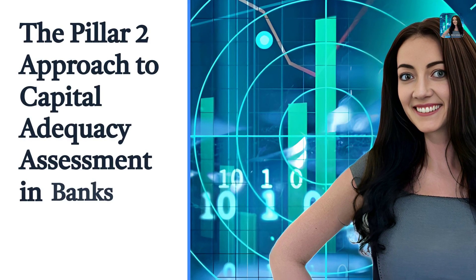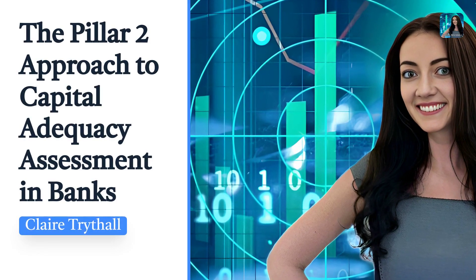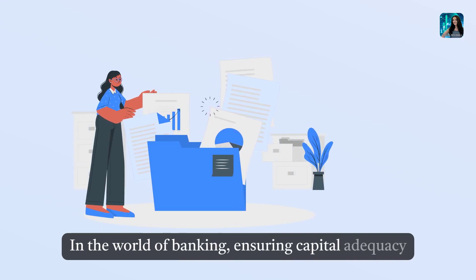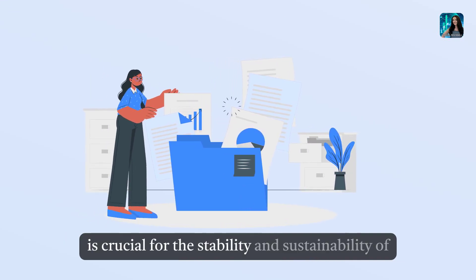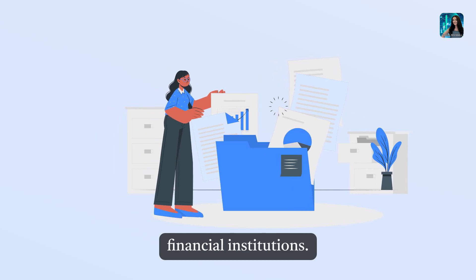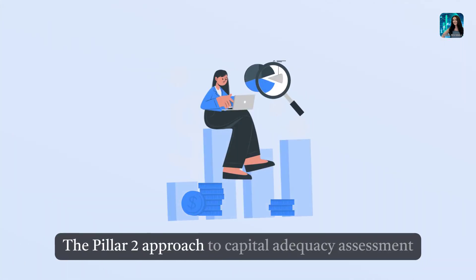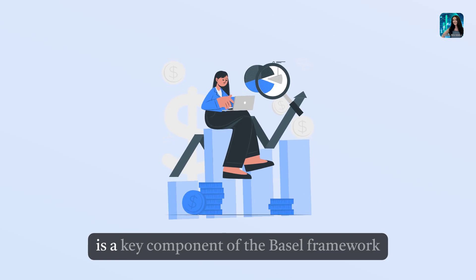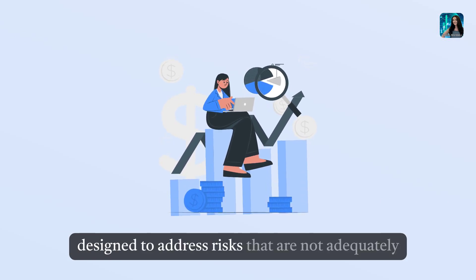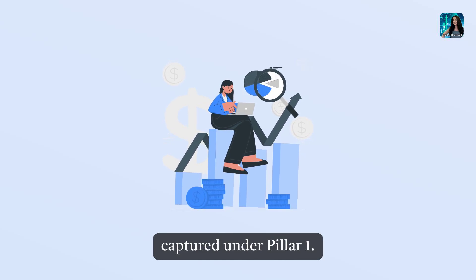The Pillar 2 Approach to Capital Adequacy Assessment in Banks. In the world of banking, ensuring capital adequacy is crucial for the stability and sustainability of financial institutions. The Pillar 2 Approach to Capital Adequacy Assessment is a key component of the Basel Framework, designed to address risks that are not adequately captured under Pillar 1.